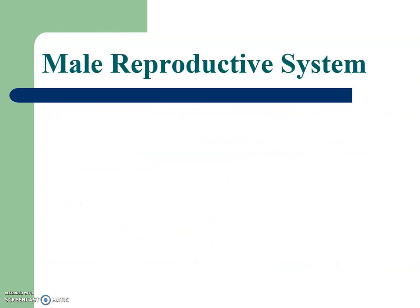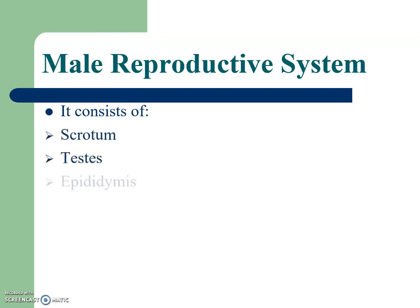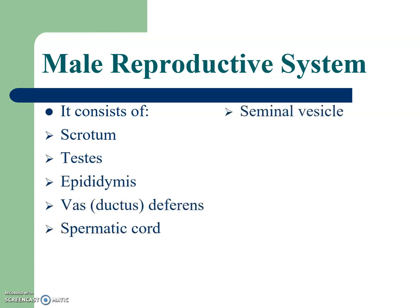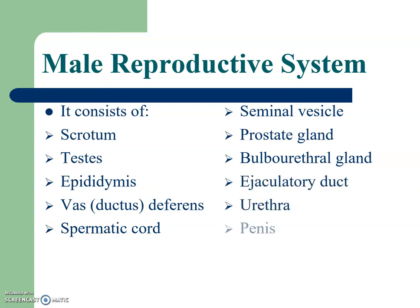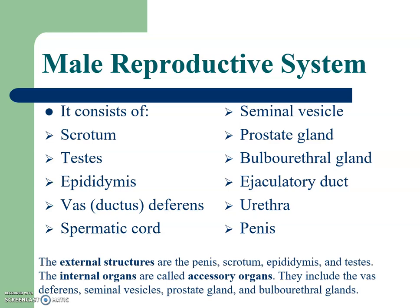Now we will study in detail the anatomy and physiology of the male reproductive system. The male reproductive system consists of scrotum, testes, epididymis, vas deferens, spermatic cord, seminal vesicle, prostate gland, bulbo-urethral gland, ejaculatory duct, urethra, and penis. It is divided into external and internal genital organs. The external structures are the penis, scrotum, epididymis, and testes, whereas the internal or accessory organs include vas deferens, seminal vesicles, prostate glands, and bulbo-urethral glands.